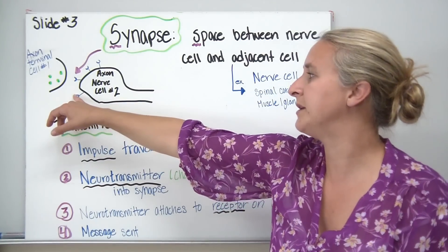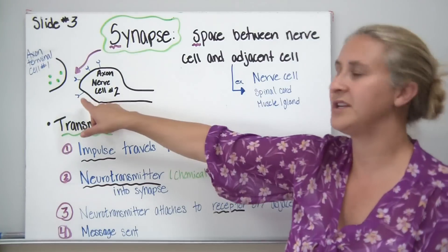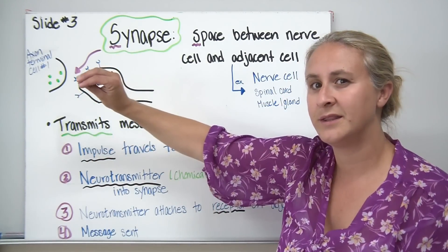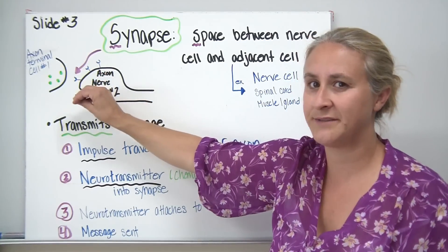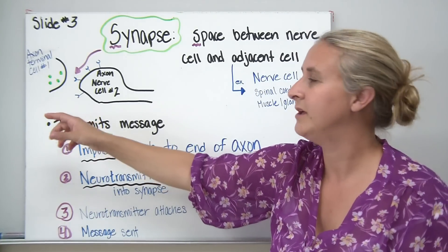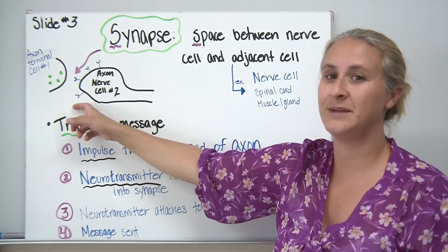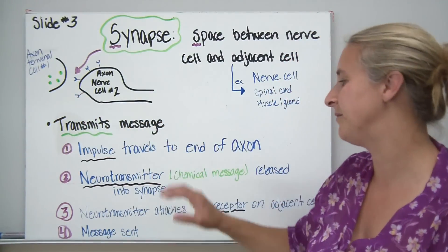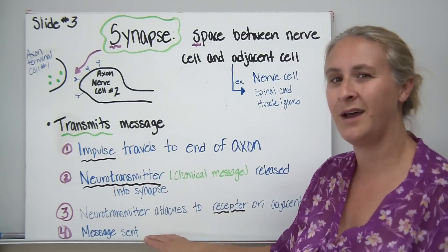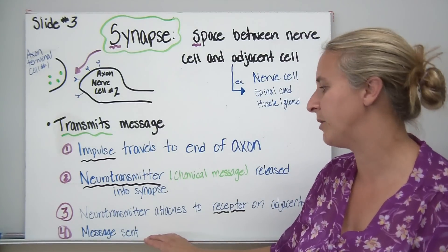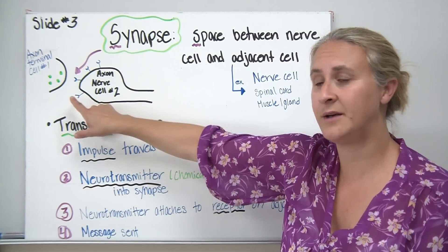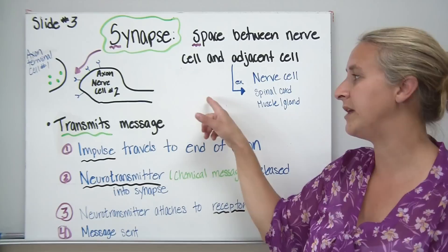The neurotransmitters then attach to receptors on the adjacent cell at the end of the dendrites. The receptors are cup-shaped because neurotransmitters have a specific shape to bind or attach to them — it's all based on shape. One neurotransmitter is specific based on its shape for the next cell, which will be covered in more detail when we discuss enzymes and receptors. Once it binds to that receptor, it sends the signal through that cell.